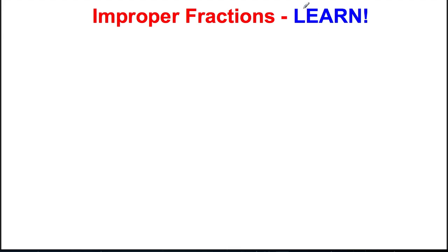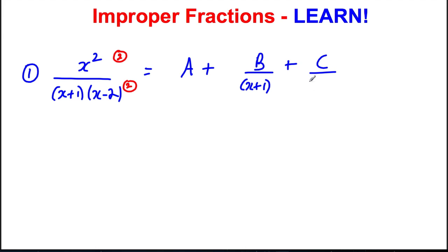So here's the first case we need to learn about. Suppose we had x squared over x plus 1, x minus 2, something like that. The order of the top is 2, the order of the bottom is 2, they're the same. When you divide orders of the same, you would get a constant term plus another constant over the first linear factor plus a third constant over the second linear factor.